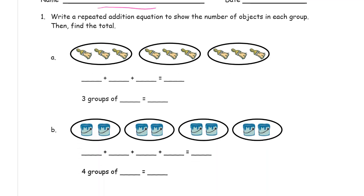And then write a repeated addition equation to show the number of objects in each group and then find the total. A repeated addition is just adding the same number, repeating it over and over again.